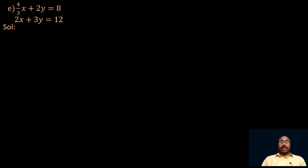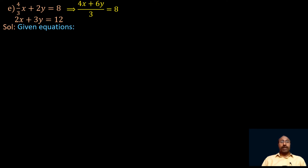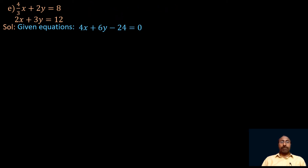Let us write these two equations in standard form. The first equation is 4/3 x plus 2y equals 8. We can take 3 as LCM, so we can write it as 4x plus 6y over 3 equals 8, which gives 4x plus 6y equals 24. So the first equation in standard form is 4x plus 6y minus 24 equals 0. The second equation is 2x plus 3y minus 12 equals 0.